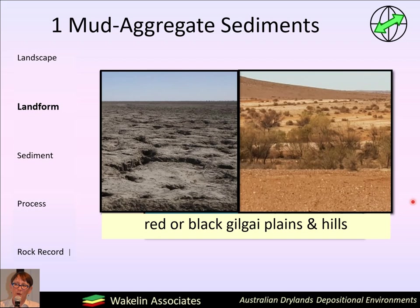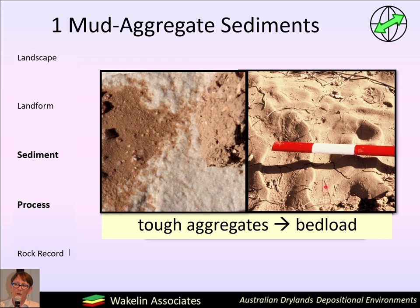The landscapes that these mud aggregates form are Gilgai — bumpy and heaved with big cracks and macropores. You can get black vertic soils, as in one of the lagoons in the Diamantina River, and red vertic soils, as in stony Gilgai in the west of New South Wales. The mud aggregates are dry and hard as lumps, but the merest touch of water causes them to collapse into sand-sized particles. Although consisting entirely of clay and silt, these sand-sized particles are quite robust and will survive long distances of fluvial transport, and when deposited they're deposited as bedload, such as these entirely mud current ripples from Fowlers Creek.